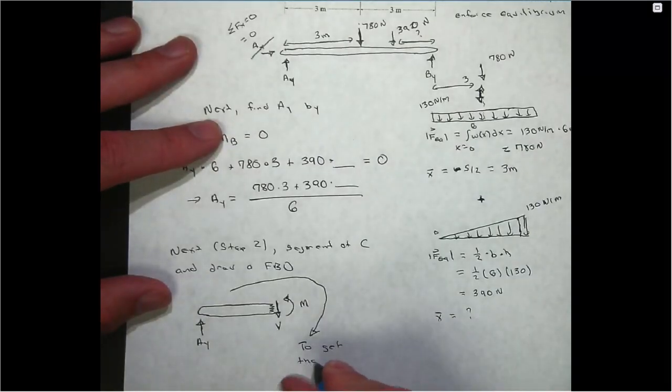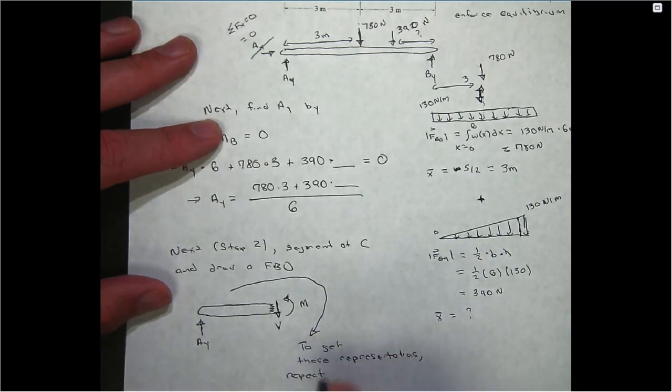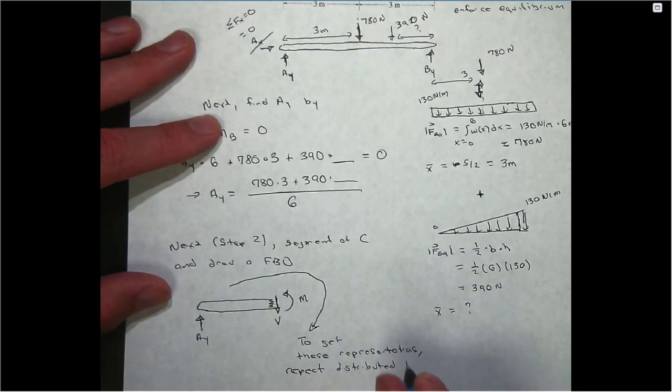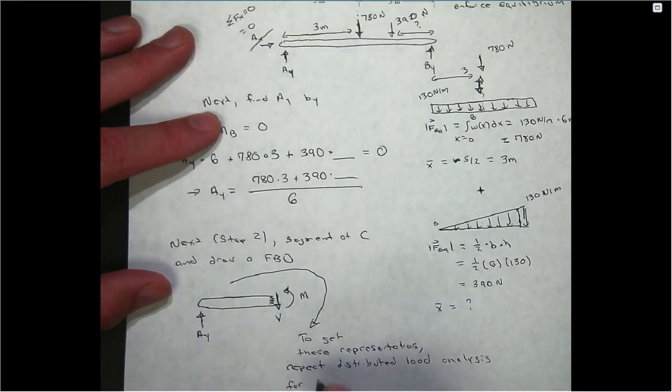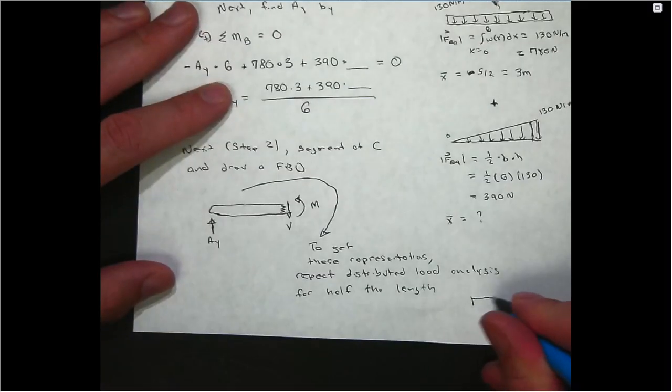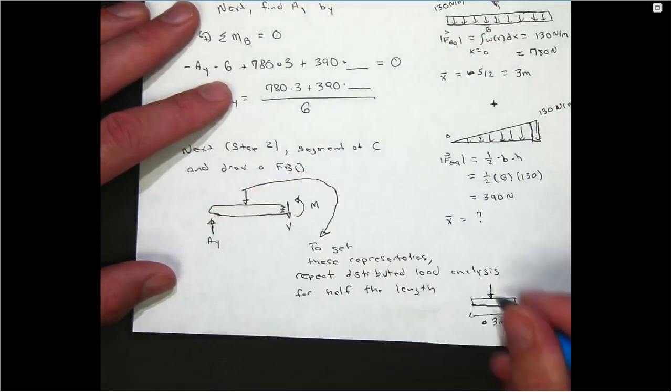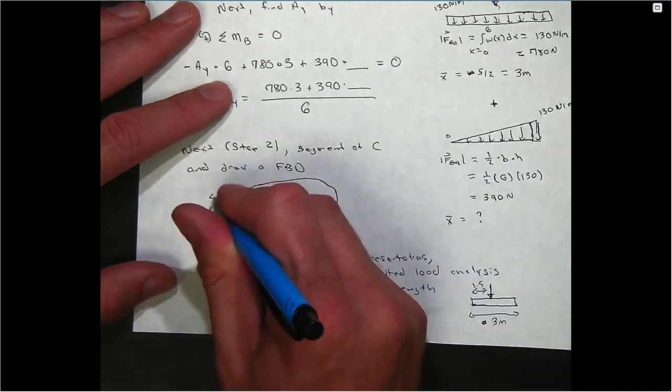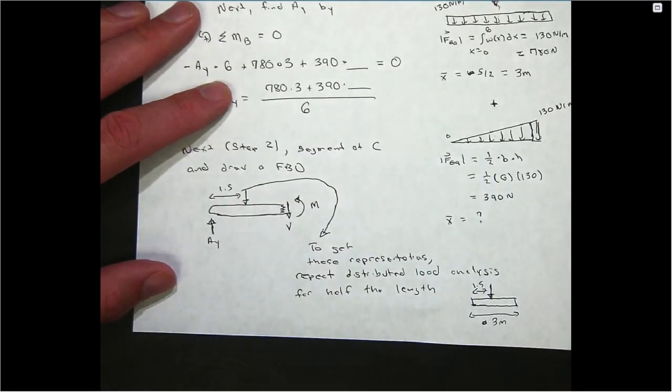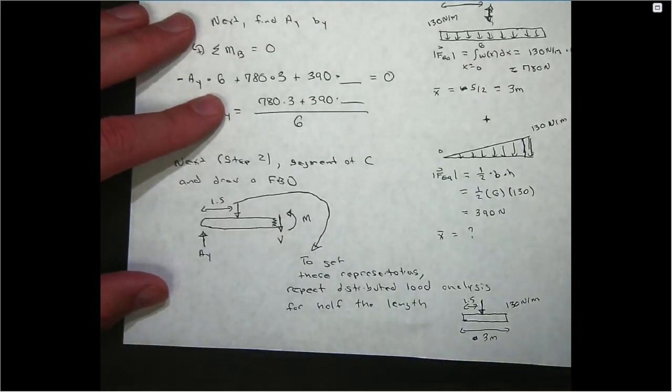What you need to do here is repeat the distributed load analysis for half the length. This portion of the load only goes from zero to C, which is three meters. So you're going to draw in the rectangular distribution, but rather than going all the way to six, it's only going to go to three. For the rectangular part, it's going to be applied halfway at 1.5 meters. You can get its magnitude relatively easily. It has the same height, 130 newtons per meter. But if you only have half of it, three meters, the equivalent loading here is only going to be 390 newtons.